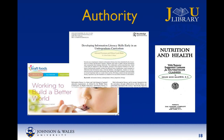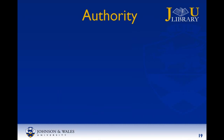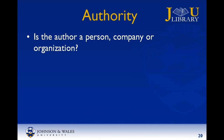The first A in CRAP is for authority. Authority refers to the source or the author of the information. Determining the author for a source is important in deciding whether the information is credible. The author should show some evidence of being knowledgeable, reliable, and truthful. To determine the author's authority or credibility, ask yourself: who is the author? Is it a person, company, or organization?